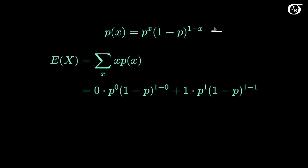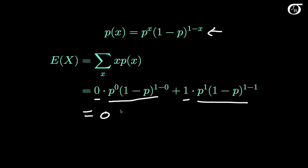Here again is the probability mass function for the Bernoulli distribution. The expectation of a discrete random variable x is equal to the sum over all possible values of x, of x times its probability of occurring. Here there are only two possibilities, 0 and 1. So we multiply 0 times the probability that 0 occurs, plus 1 times the probability that 1 occurs. That works out to 0 times (1 minus p), plus 1 times p, and overall we end up with p. So the mean, or expected value, of a Bernoulli random variable is p.